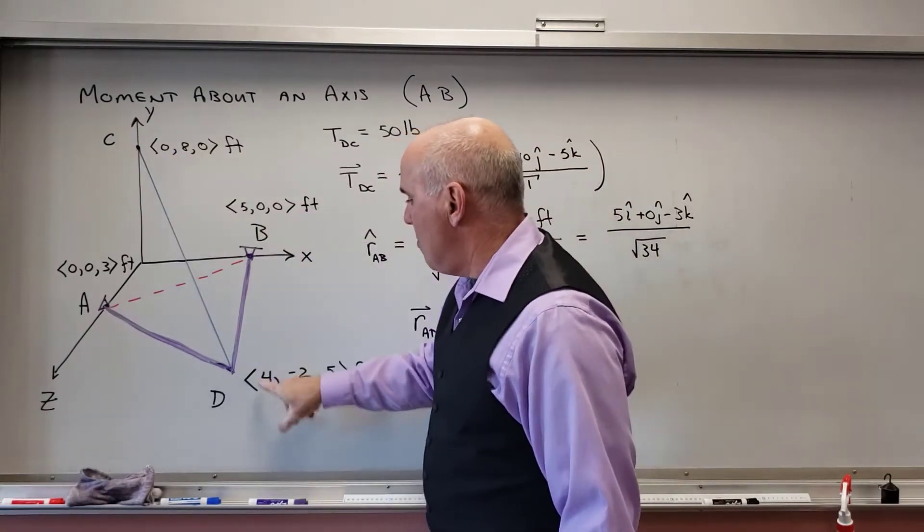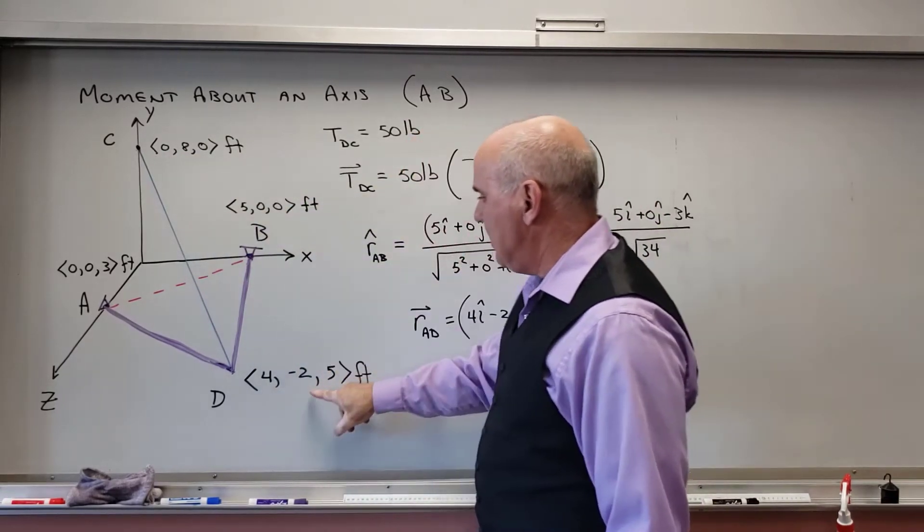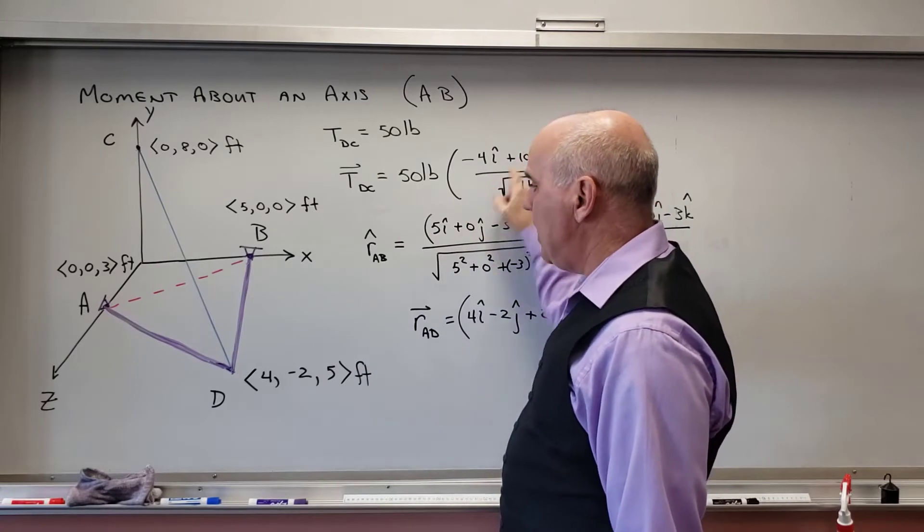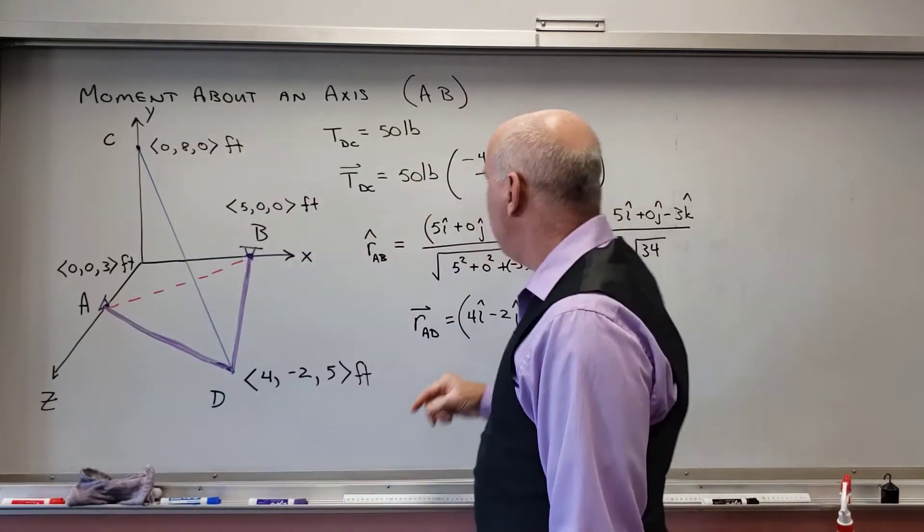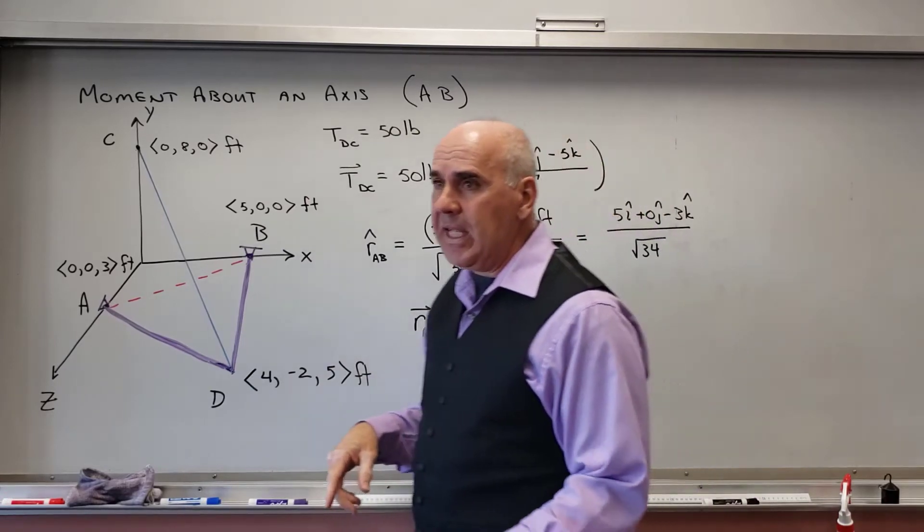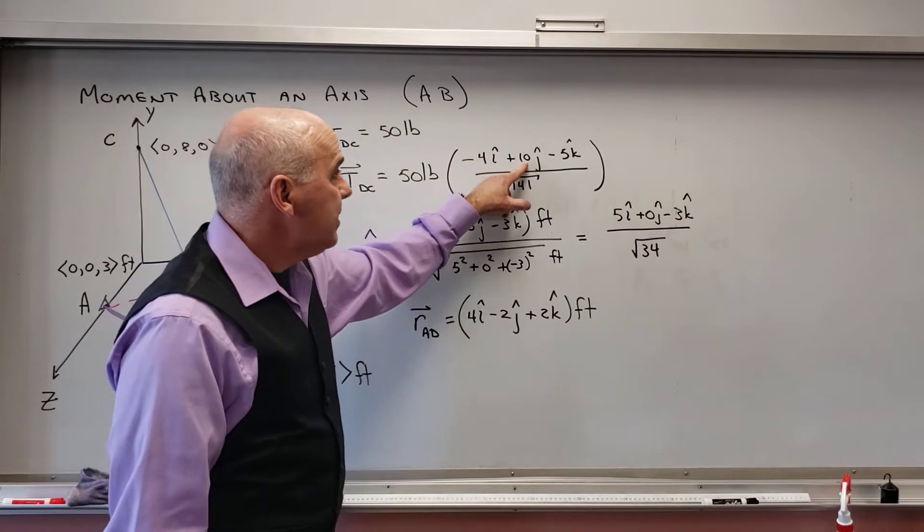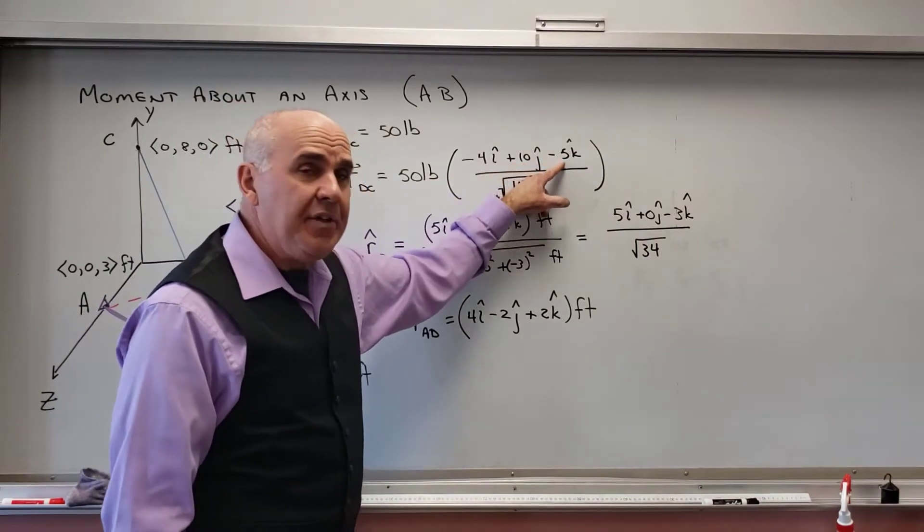So 0 minus 4 gives me negative 4 in the i. 8 minus a minus 2 gives me positive 10 in the j, so I'm going up 10. And then 0 minus 5 gives me negative 5 in the k. So I'm going to get (-4i + 10j - 5k) feet.